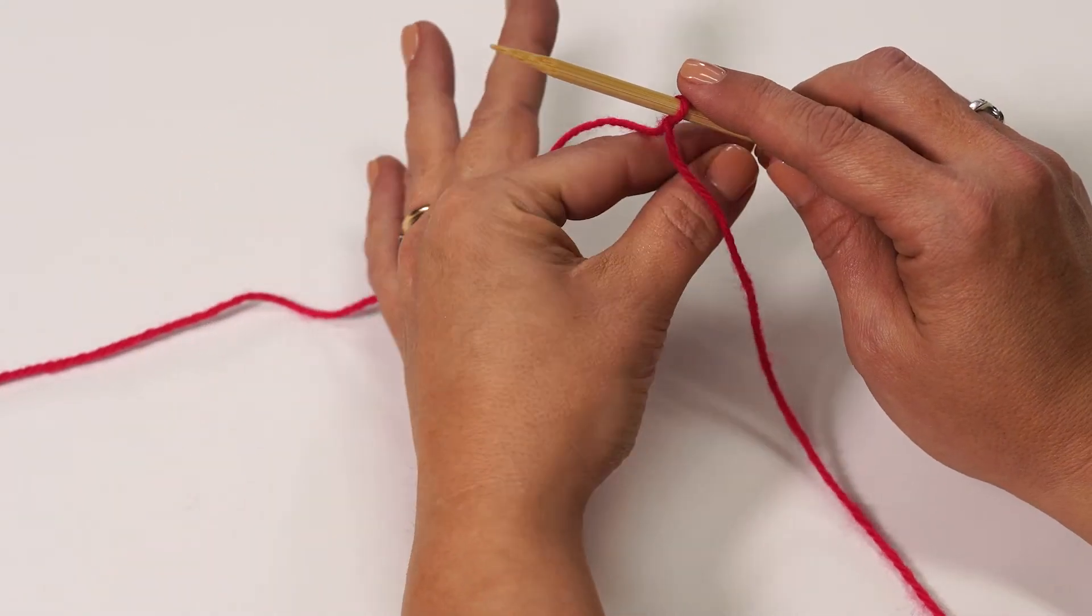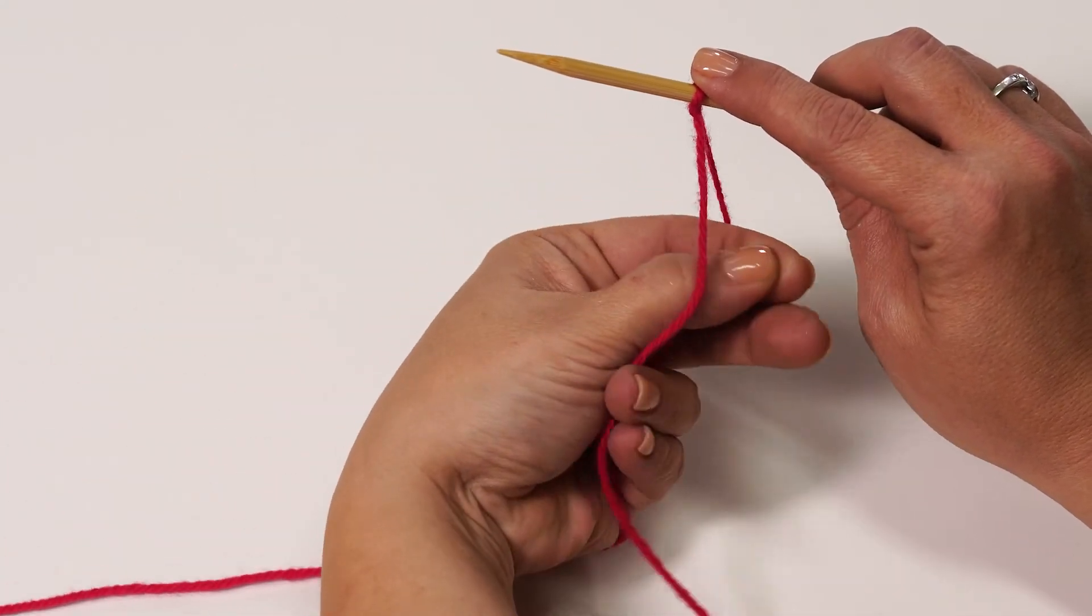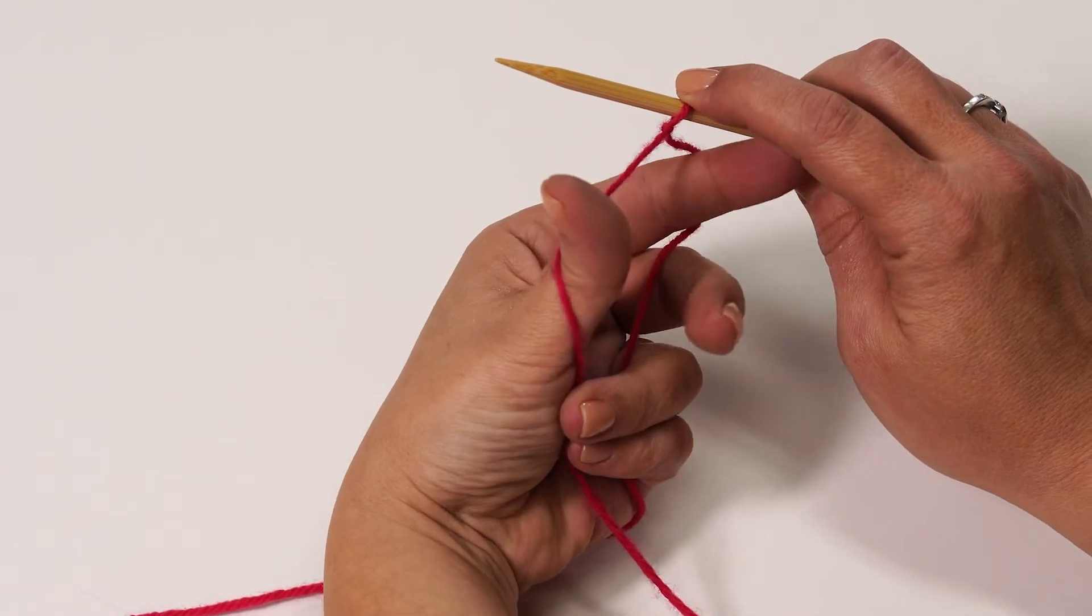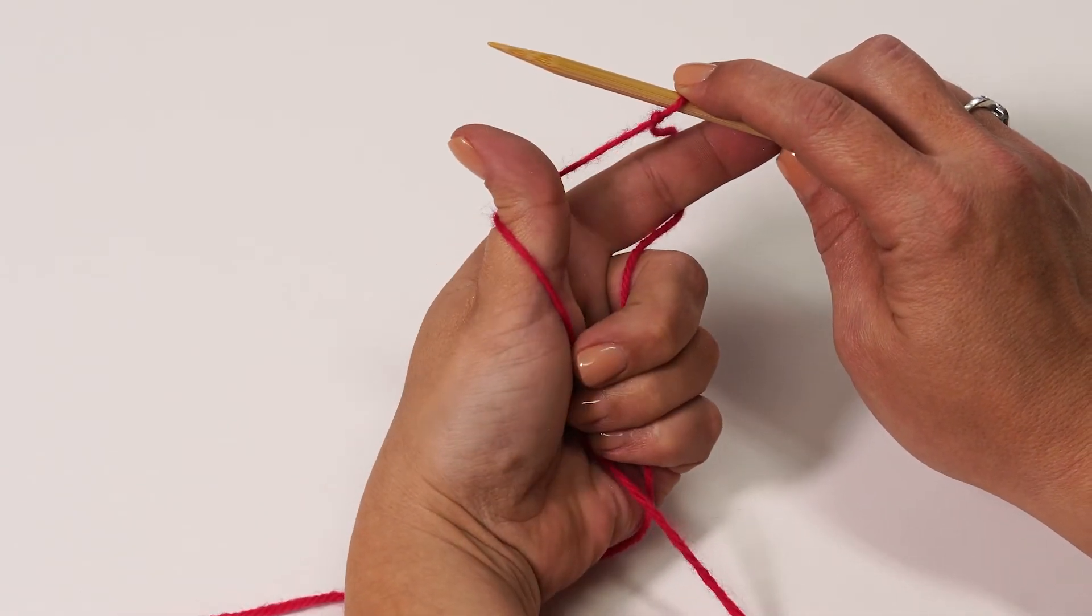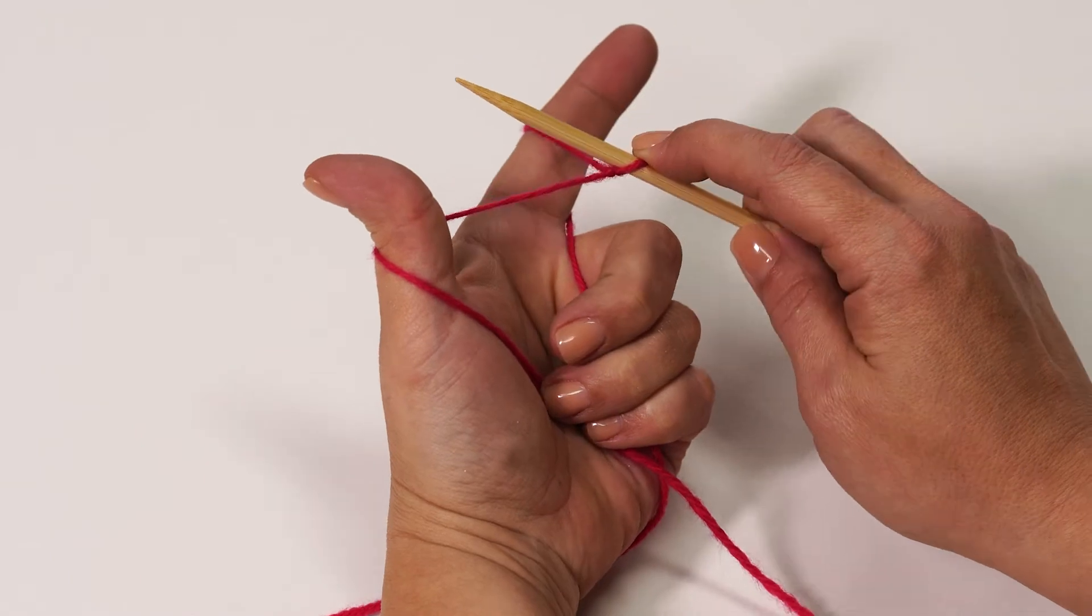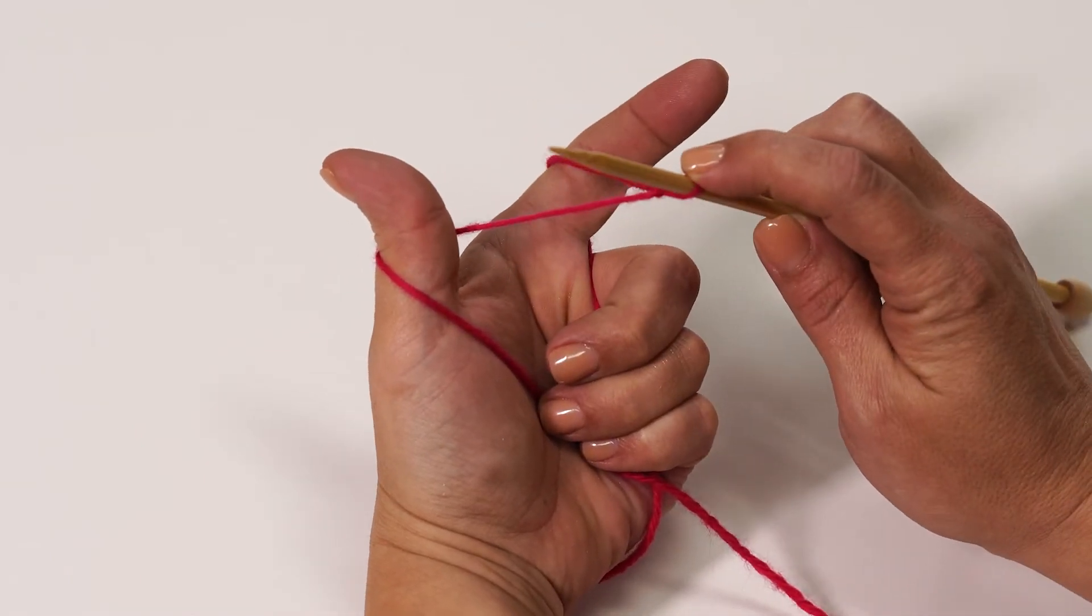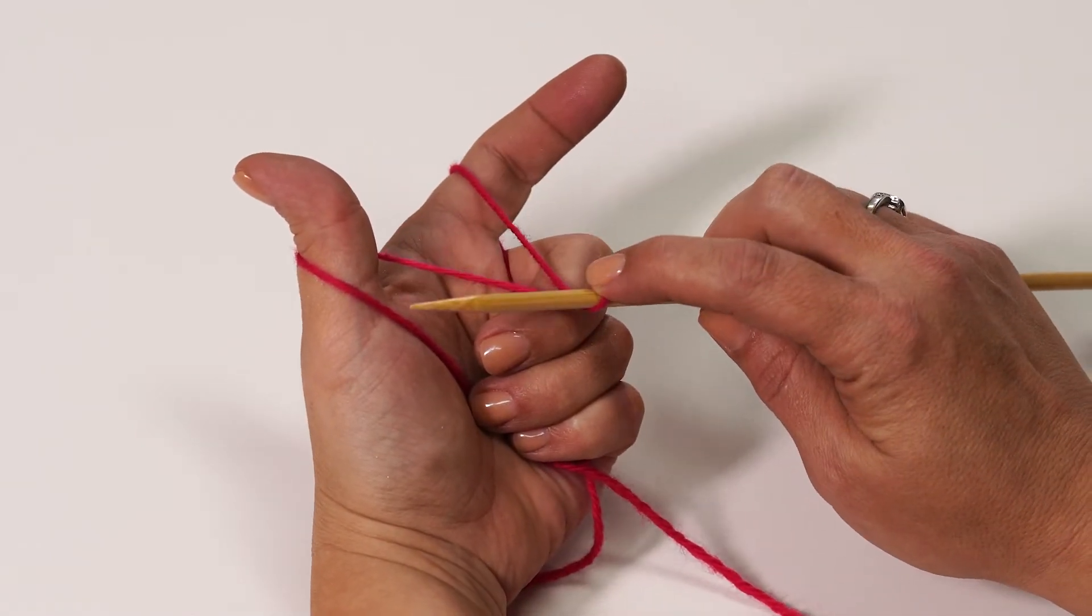Slip your fingers through both your yarn strands and wrap your bottom three fingers around them. Spread out your thumb and index finger. Pull the yarn down so it looks like a slingshot.